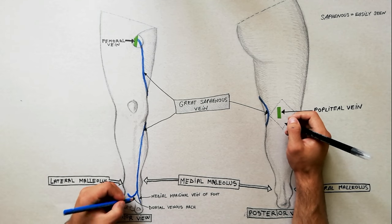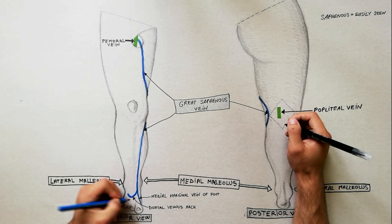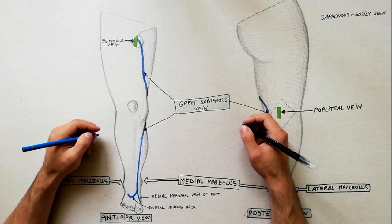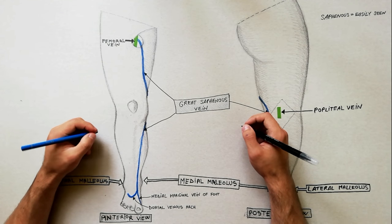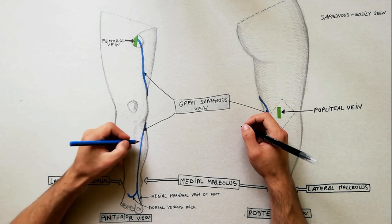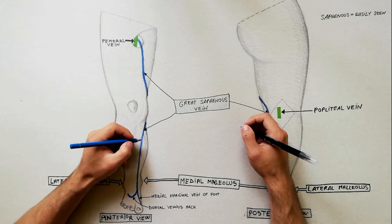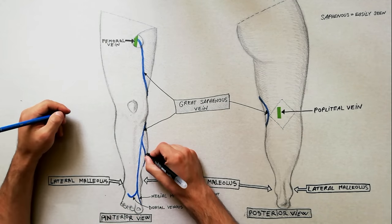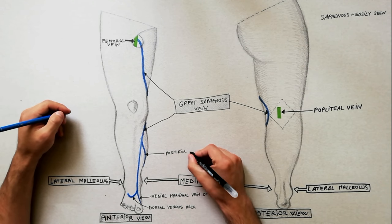The tributaries of the great saphenous vein are, at the commencement of course, medial marginal vein of the foot. In the leg, posterior arch vein. This vein is fairly large and constant. It collects blood from the posterior medial aspect of the calf.